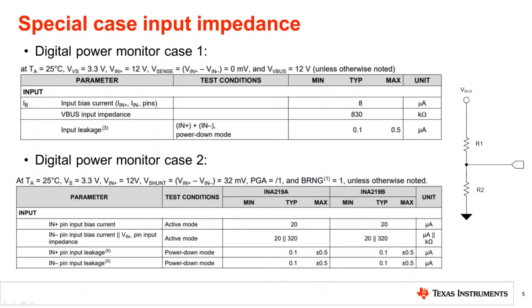In some digital power monitors, the bus supply voltage is measured through either a dedicated VBUS input pin or through one of the shunt voltage input pins. In case number one, the device measures bus voltage through a dedicated VBUS pin. With a simple voltage divider, the high voltage VBUS is divided down to a low voltage signal that is within the range of the internal ADC. The total resistance of this divider is the equivalent input impedance of 830 kOhms.